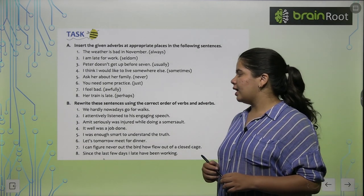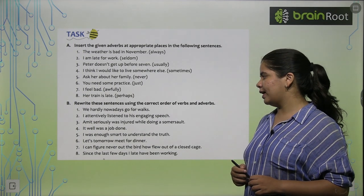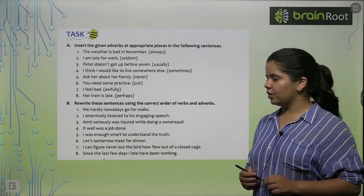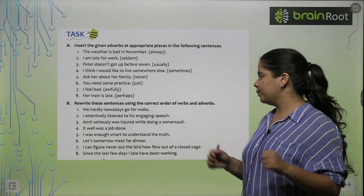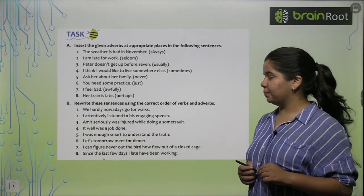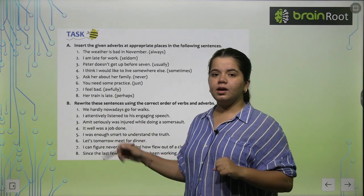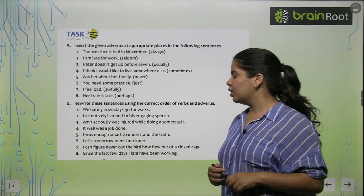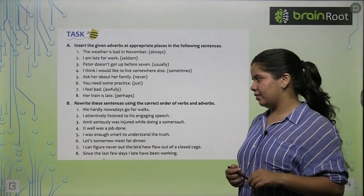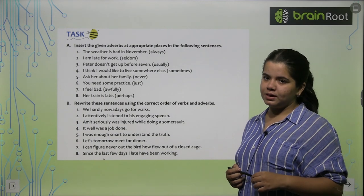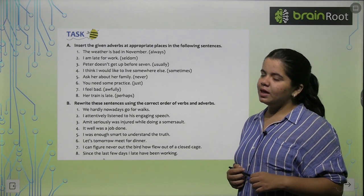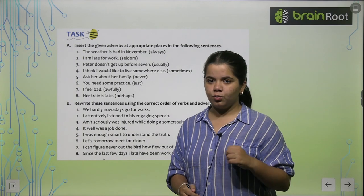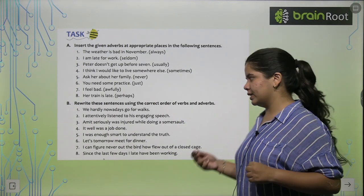Third: 'Amit seriously was injured while doing a somersault' — the answer is 'Amit was seriously injured.' Fourth: 'It well was a job done' — it should be 'It was a well-done job.' The last four you should try yourself as homework.